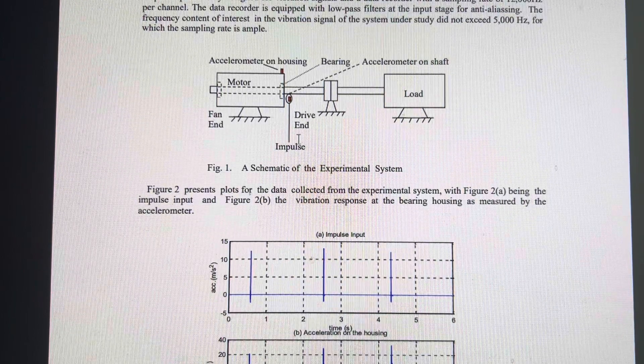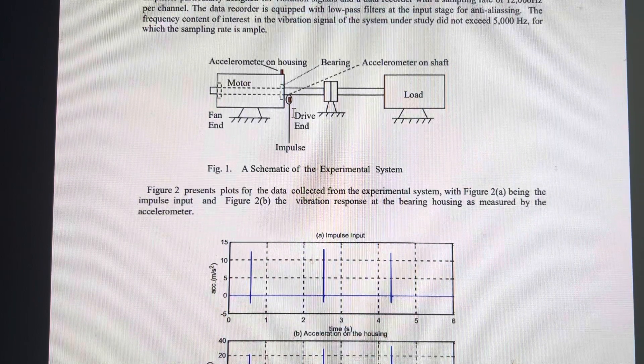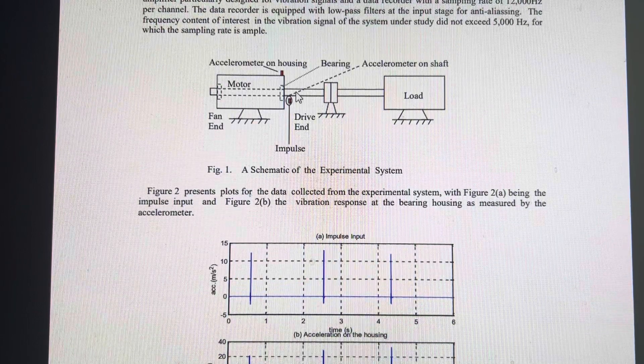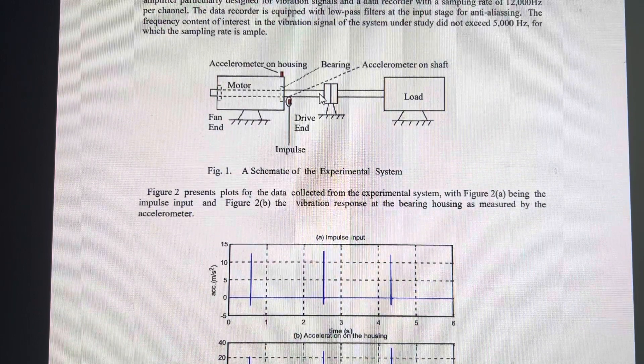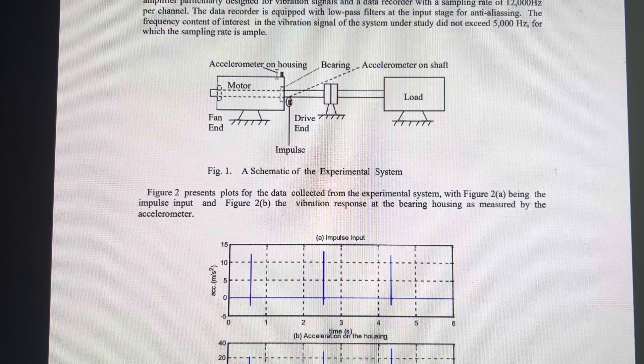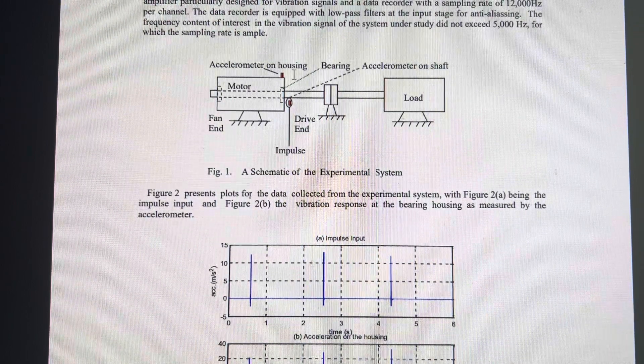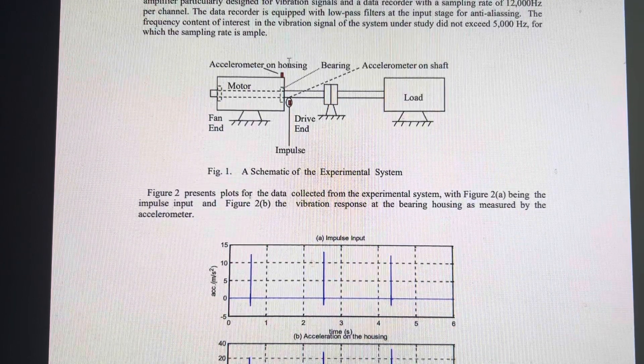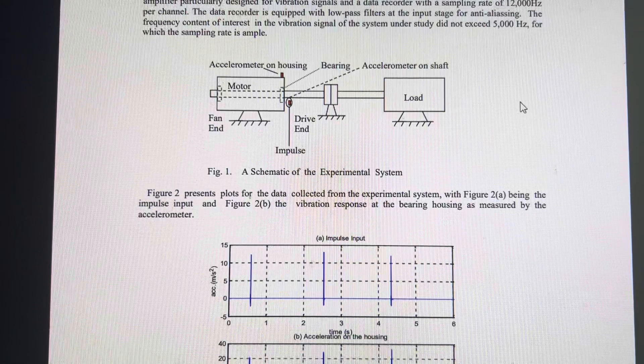You can add impulse signals or impact to the bearing shaft, and the accelerometer mounted on the shaft can detect the change. The vibration signal will be recorded by the data acquisition system.